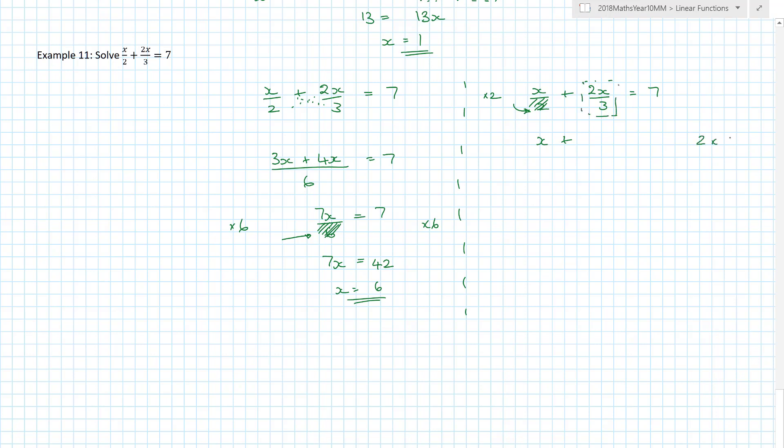That becomes x. That's the whole point. I multiply all of this by 2. When I do that, I'm becoming 2 lots of 2x on 3. I'm only multiplying the top number because 2 is the same as 2 divided by 1. When you multiply fractions, you multiply the top together, multiply the bottom together. So that becomes 4x on 3. And I remember to multiply everything by 2, so 7 times 2 is 14.